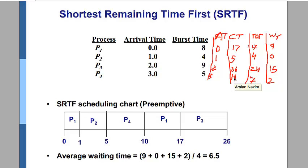From the completion times we calculate turnaround time, which is given by completion time minus arrival time: 17 minus 0 is 17, 5 minus 1 is 4, 26 minus 2 is 24, and 10 minus 3 is 7.